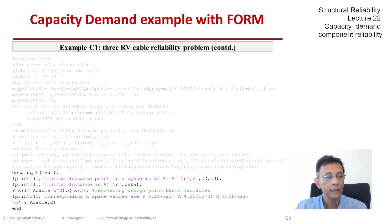Once fmincon does its job, hopefully it will converge and we will get the answer. Beta would be the square root of fval, because your objective is basically u1 square plus u2 square plus u3 square, or z1 square plus z2 square plus z3 square in this program's terminology. And then we output the results.